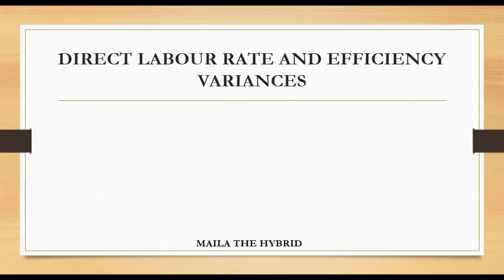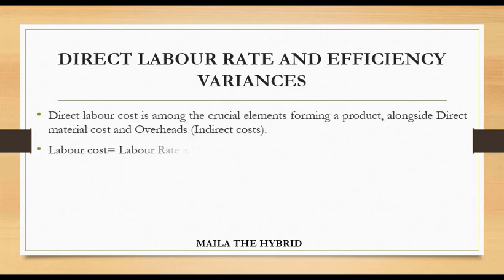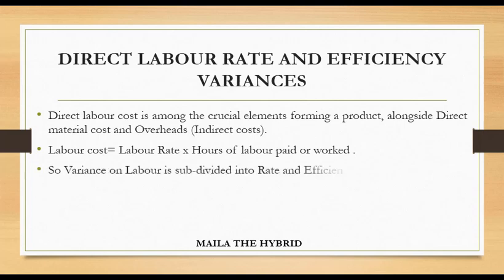How do we obtain labor cost? Labor cost will always be the labor rate times the hours of labor paid or worked. In a practical sense, we usually use hours, so labor cost equals labor rate times time of labor paid or worked. The word rate and hours give us the two variances.